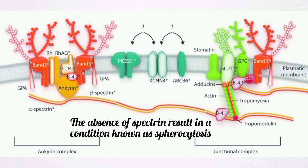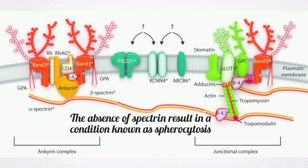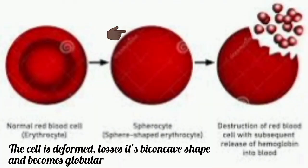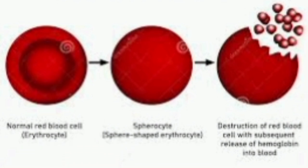The absence of spectrin results in a condition known as spherocytosis. In this condition, the cell is deformed, loses its biconcave shape, and becomes globular. The spherocyte is very fragile and can easily rupture.